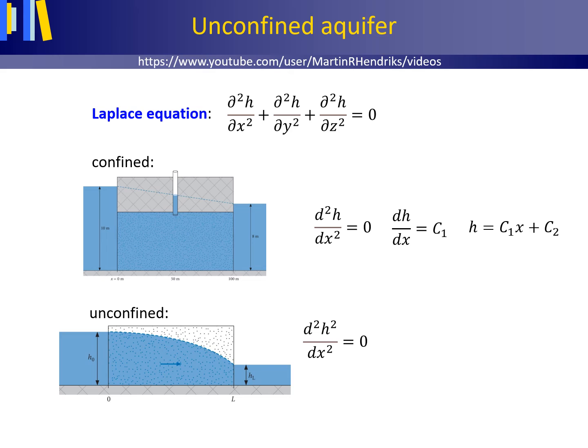Same for an unconfined aquifer. When we integrate this second derivative, we get dh squared/dx equals c1. And when we integrate this yet another time, we get h squared equals c1x plus c2, which describes the parabolic distribution of h, the hydraulic heads, for this unconfined or phreatic aquifer. Also here, c1 and c2 are constants that can be determined by inserting the left and right boundary conditions. Now for this specific unconfined groundwater flow case.